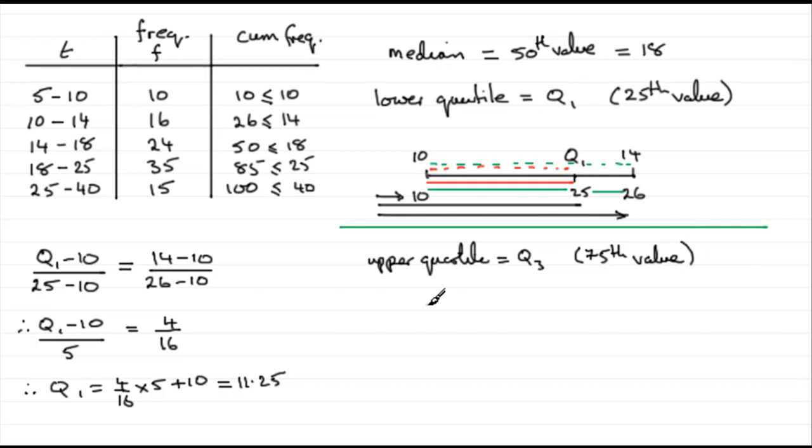So again, I'd be drawing my class interval. So where is the 75th value going to appear? Well, it's going to appear in the 18 to 25 class interval. So I'd put 18 on the top here, 25 on the end. And we know that we've got 85 values that are less than or equal to 25. So I'll put 85 on the end there. And how many values are less than 18? 50. I'm looking for the 75th value. It's going to be somewhere up here. So that would be my Q3, and I need the 75th value.